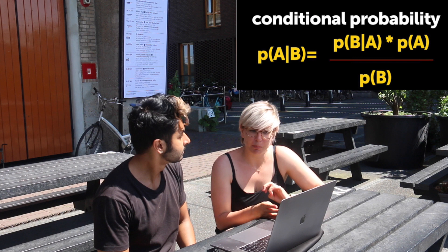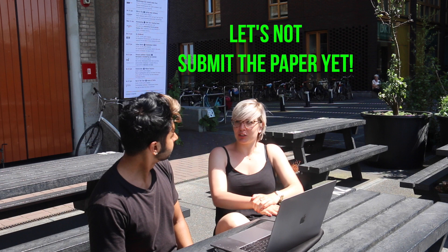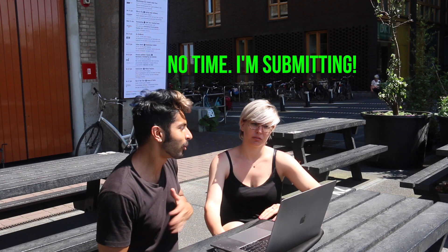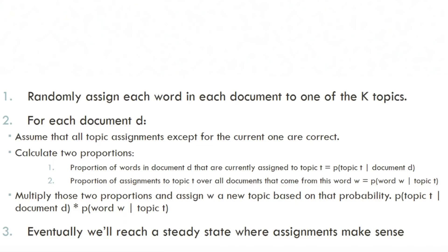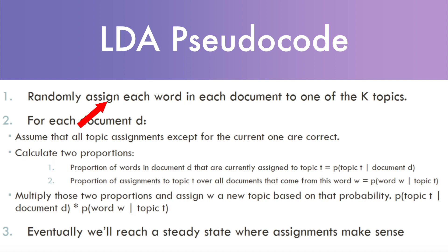We can think of this whole process in three steps: we tell the algorithm how many topics we think there are; the algorithm assigns every word to a temporary topic; then the algorithm checks and updates the topic assignments, looping through each word in every document.